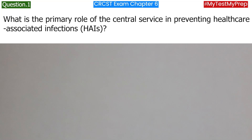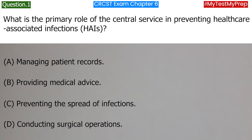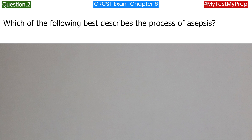What is the primary role of the Central Service in preventing Healthcare-Associated Infections (HAIs)? A. Managing patient records. B. Providing medical advice. C. Preventing the spread of infections. D. Conducting surgical operations. Answer: C. Preventing the spread of infections.